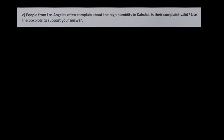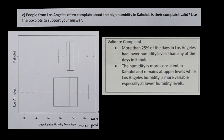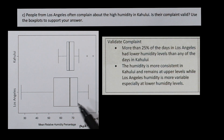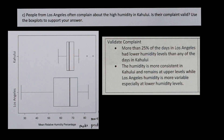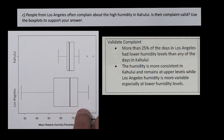Kahului's more consistent mean relative humidity should make predictions more dependable than the more variable Los Angeles humidity. When it comes to the complaint, there are arguments that both validate and refute it. One argument to validate it: more than 25% of the days in Los Angeles had lower humidity levels than any of the days in Kahului, pointing to LA having lower relative humidity. Also, humidity is more consistent in Kahului and it's consistently high, where Los Angeles occasionally has very low humidity days.